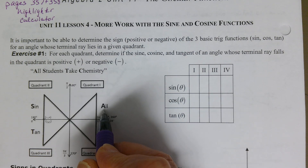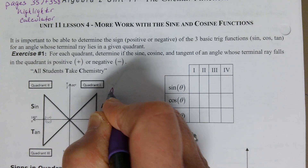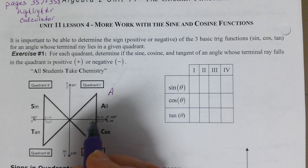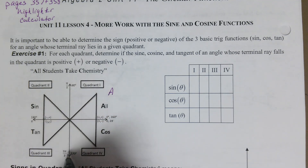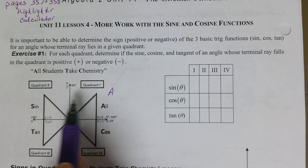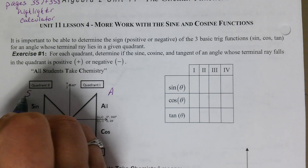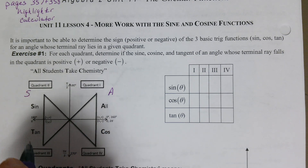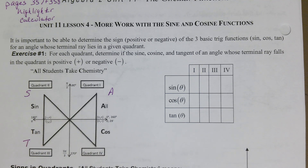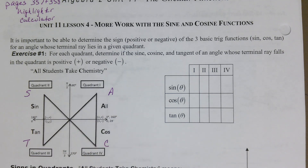We start in quadrant one — A for 'all' — and then following the quadrants numerically counterclockwise: S for 'students,' T for 'take,' and C for 'chemistry.'